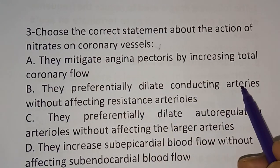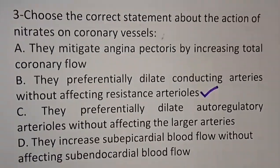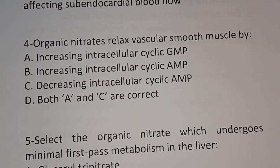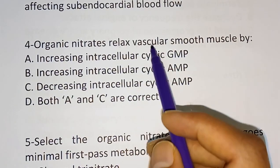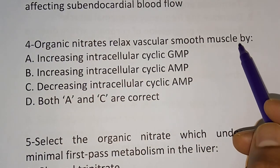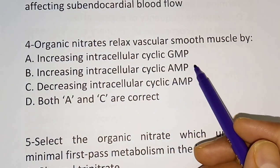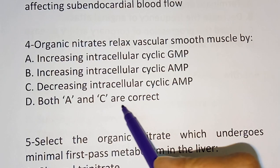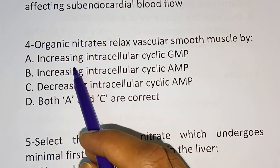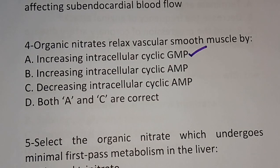Question four: organic nitrates relax vascular smooth muscle by which mechanism? Options: A) increasing intracellular cyclic GMP, B) increasing intracellular cyclic AMP, C) decreasing intracellular cyclic AMP, D) both A and C. The correct answer is option A — increasing intracellular cyclic GMP.